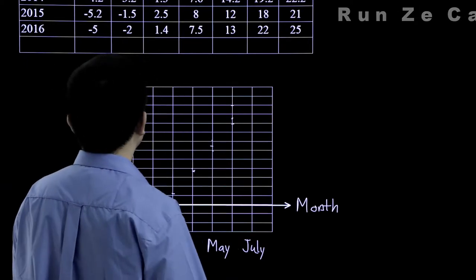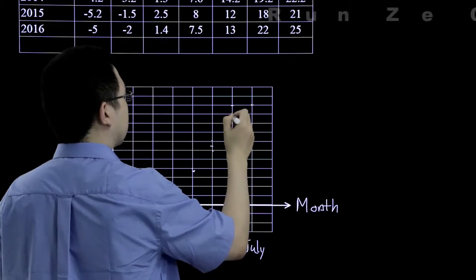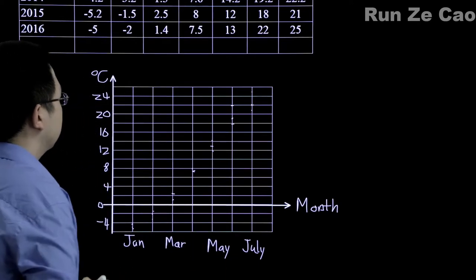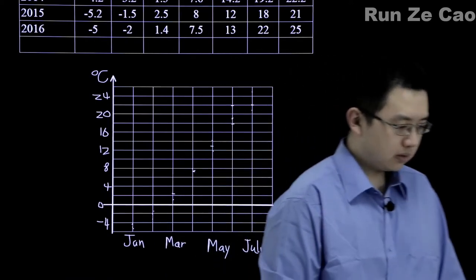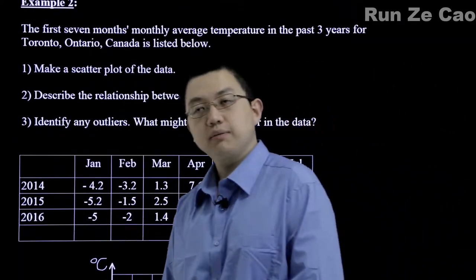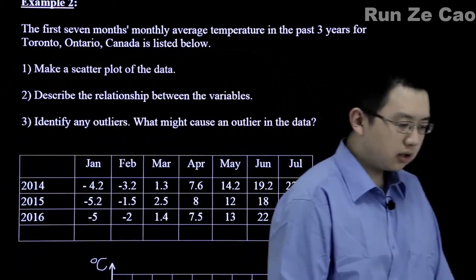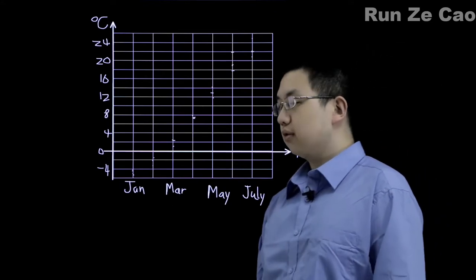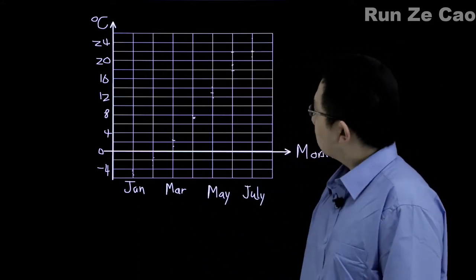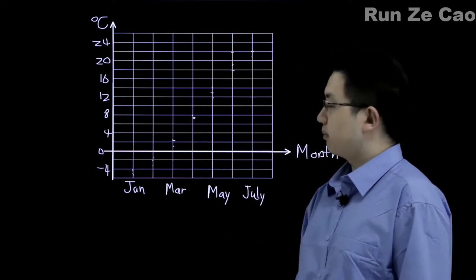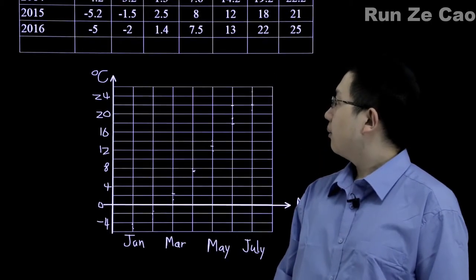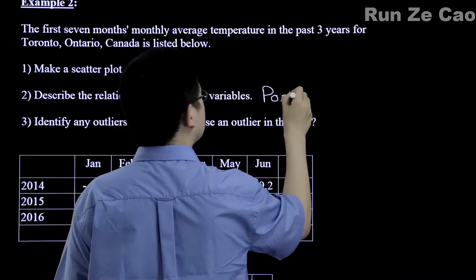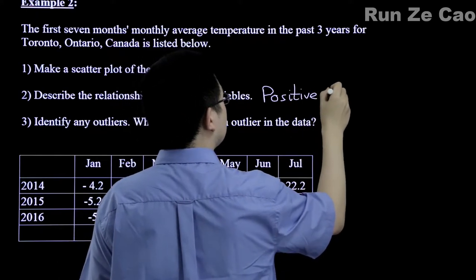July is 22.2, 21, and 25. Describing the relationship between the variables: it looks almost linear, even though we know that over the months the heating is not actually linear because it eventually plateaus and drops back down. So we can say nearly linear, or a curve of best fit with heating accelerating towards the summer months. Overall, we can say it is a positive relationship.